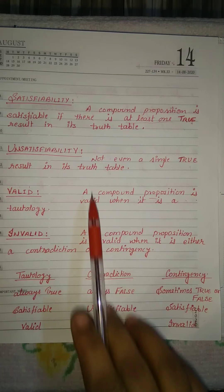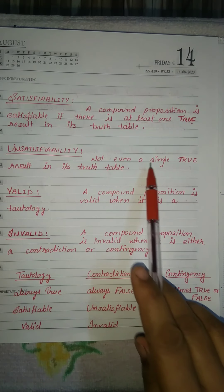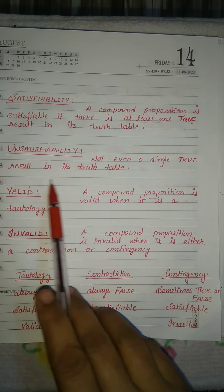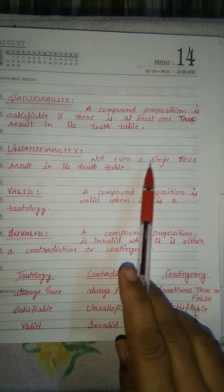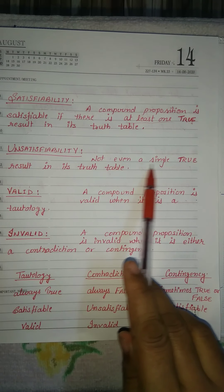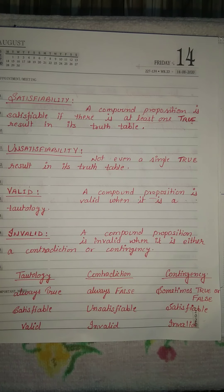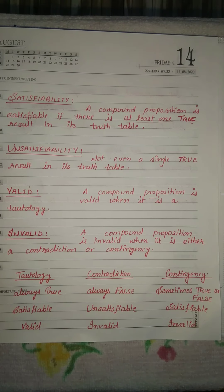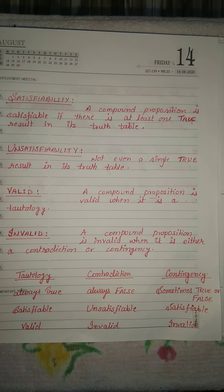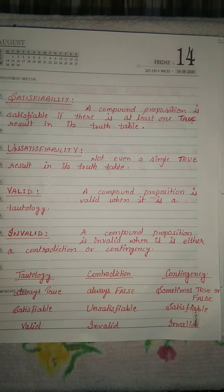Unsatisfiability is when there is not even a single true result in its truth table. Not even a single true result in its truth table. So we can say that a contradiction is always unsatisfiable.